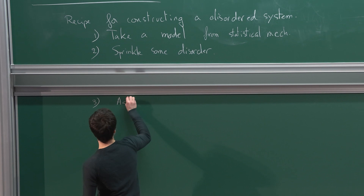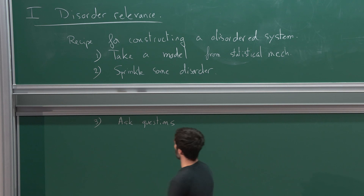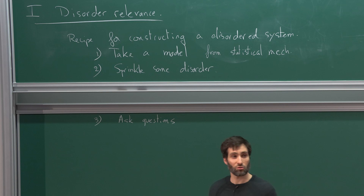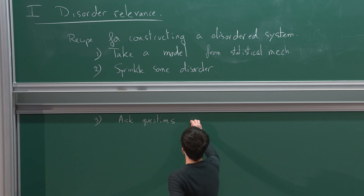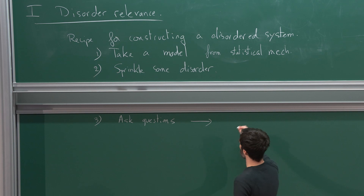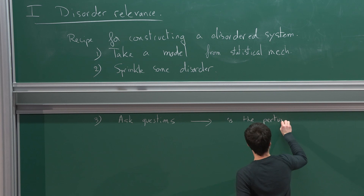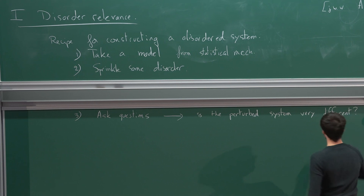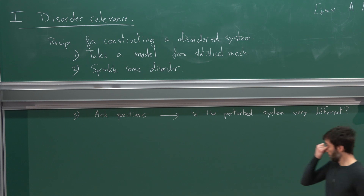The main question is: is the perturbed system very different from the original one? The question you ask is the stability of your system under the sprinkling of some disorder. What you want to do is compare the perturbed system with the original system — that is the question of disorder relevance.